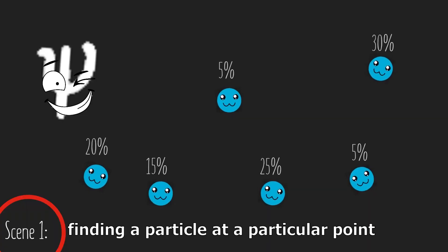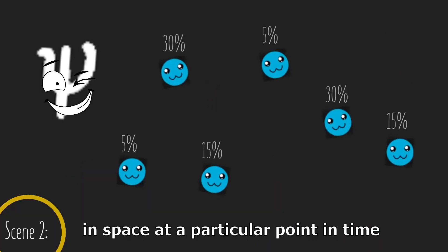Put simply, it gives us the probability of finding a particle at a particular point in space, at a particular point in time.